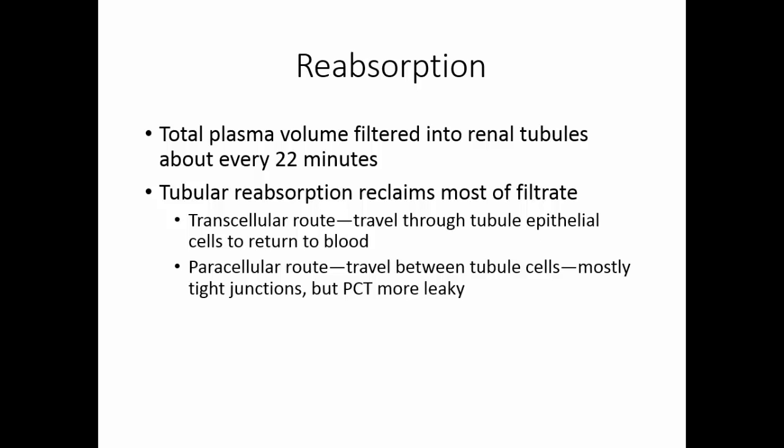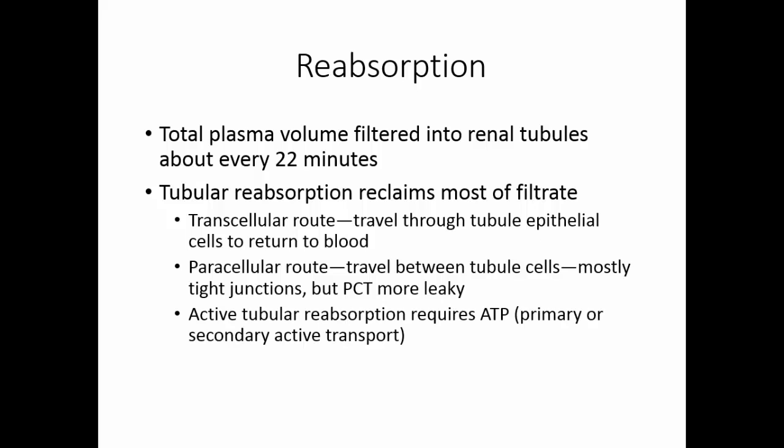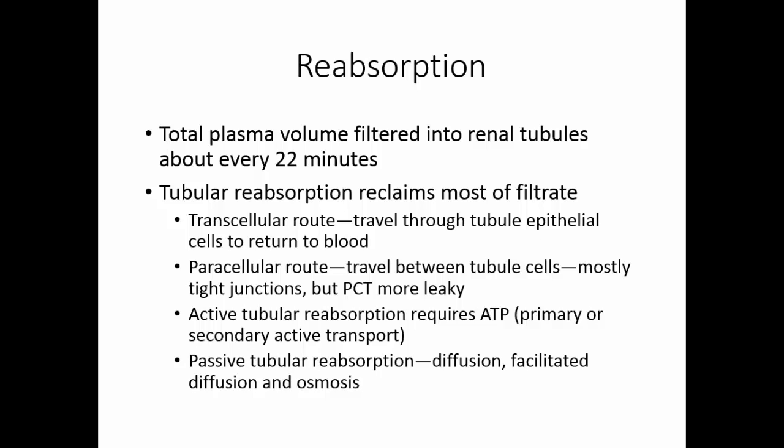Paracellular reabsorption can really happen only in the proximal convoluted tubules, which have more spaces between the cells. Throughout most of the renal tubule, the epithelial cells are held together with tight junctions. Active tubular reabsorption requires ATP — this is going to be primary or secondary active transport. But many molecules move through passively by diffusion, facilitated diffusion, or osmosis.